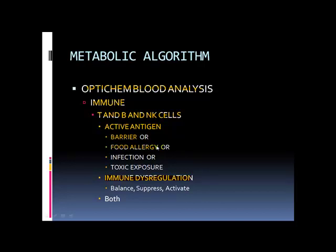The IgE — immunoglobulin E — reactions are the fast ones. You drink milk and your eyes swell shut; you're aware of those and you stop drinking milk. The ones we pick up on are the IgG, immunoglobulin G reactions. Those are more of a slow burn. They activate your intestinal immune system and are still very toxic to your system, but they are more subtle in their presentation.